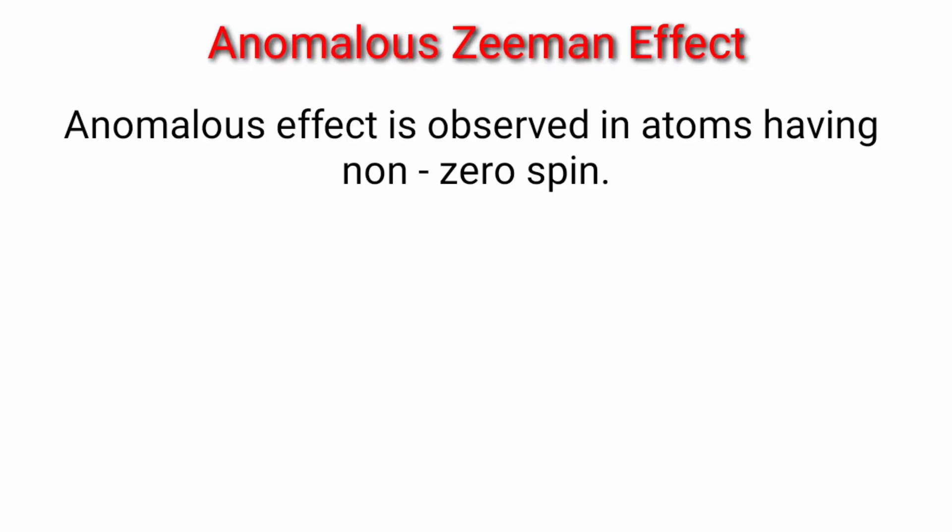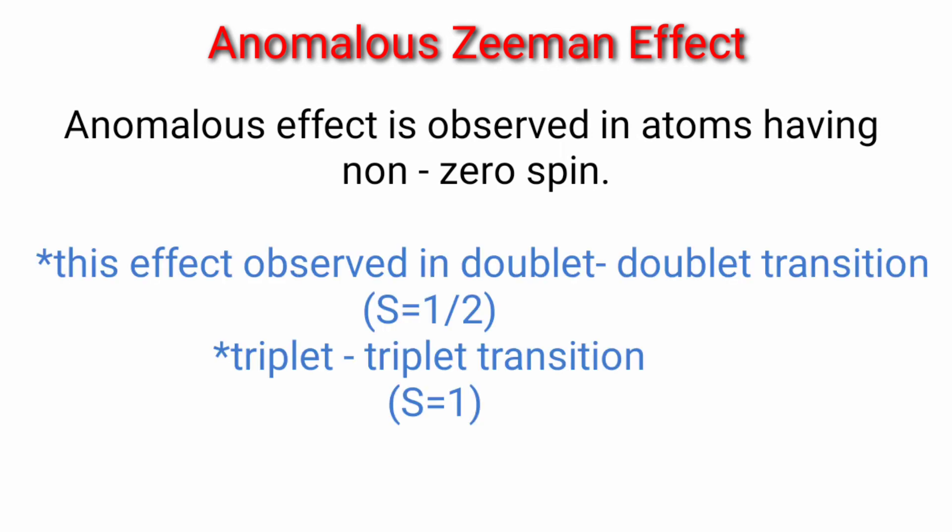Next, anomalous Zeeman effect is observed in atoms having non-zero spin. So this happens in doublet-doublet transitions or triplet-triplet transitions, where we have spin non-zero.